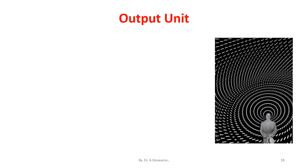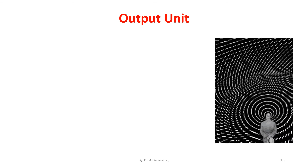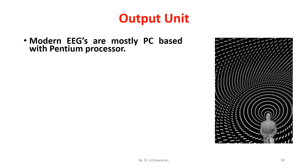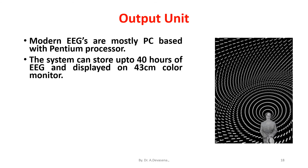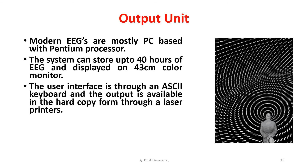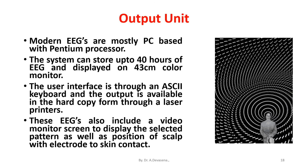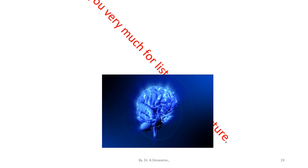Output unit. Modern EEGs are mostly PC-based with a Pentium processor. The system can store up to 40 hours of EEG and display it on a 43 cm color monitor. The user interface is through an ASCII keyboard and the output is available in hard copy form through laser printers. These EEGs also include a video monitor screen to display the selected pattern as well as position of scalp sites with electrode to skin contact. Thank you very much for listening to this lecture.